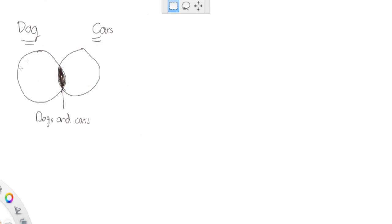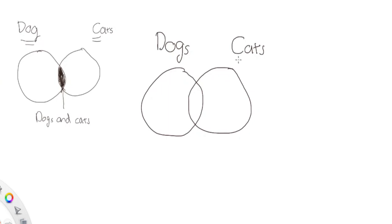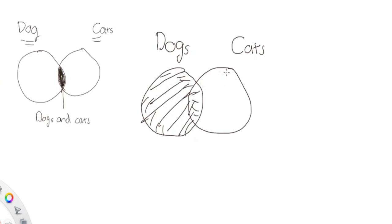Now what if I asked you to find the people who like dogs OR cats? You do the same thing — the people who like dogs or cats are going to be the entire shaded area: all the people on the dogs side, plus the or, plus all the people on the cats side. So dogs OR cats is the whole shaded area of both circles.